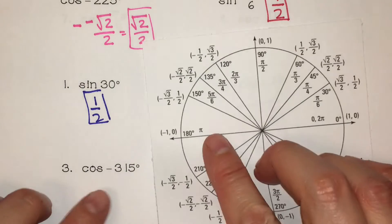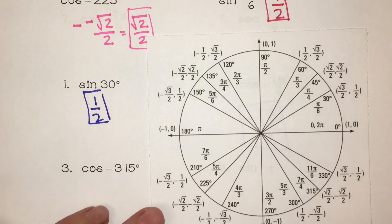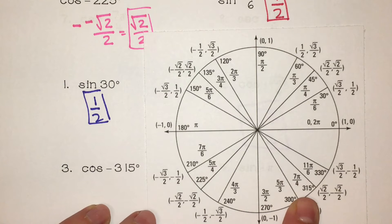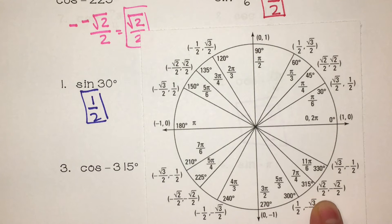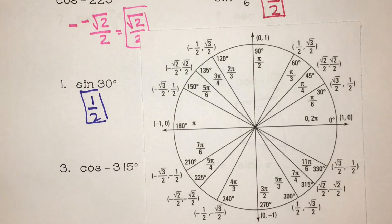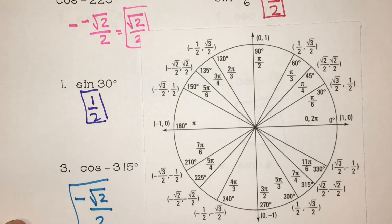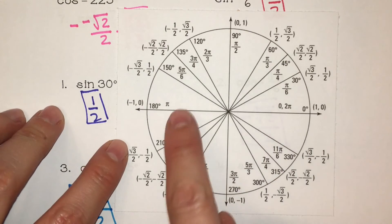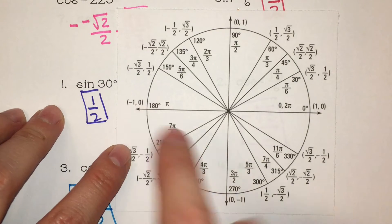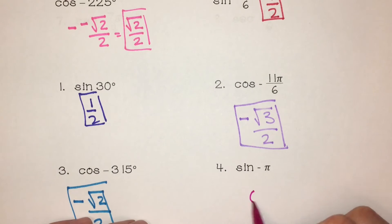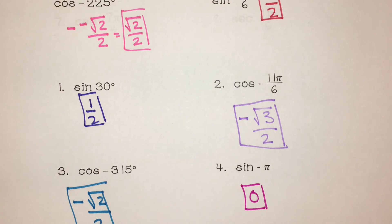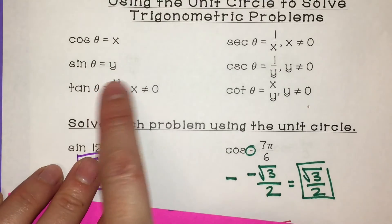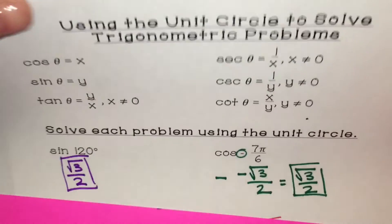Cosine of negative 315 degrees — at 315 degrees, cosine is square root of 2 over 2, but that negative makes it negative square root of 2 over 2. The last one is sine of π — here's π, and sine is the y value, which is 0. Those ones were pretty easy using just sine and cosine, so now we're going to use some of the other trig values.